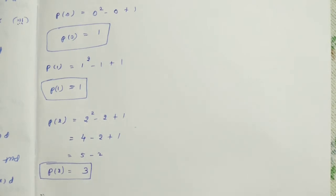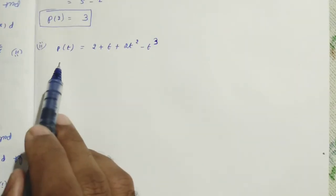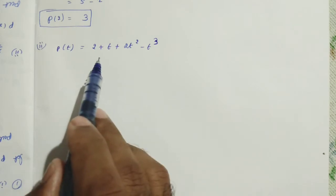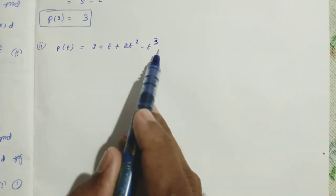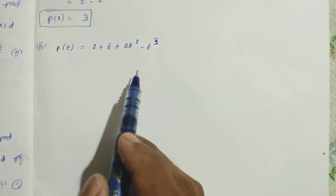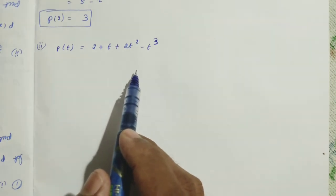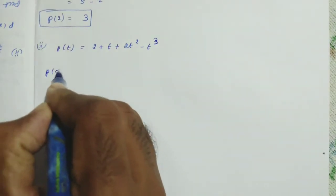Next, second polynomial. Here, second polynomial: P of t is equal to 2 plus t plus 2t squared minus t cubed. It is a polynomial in one variable t. Now we should find P of 0.